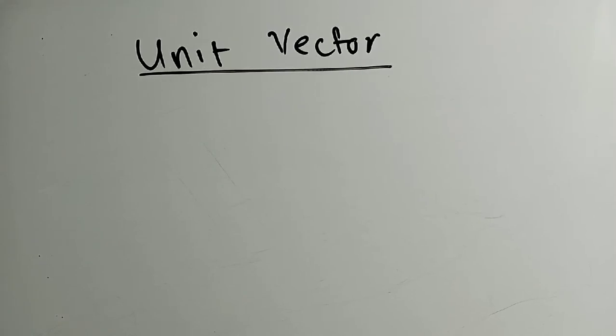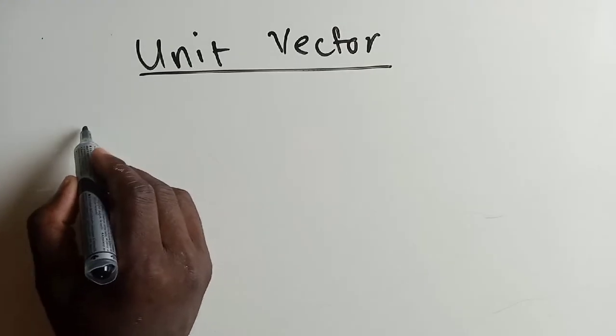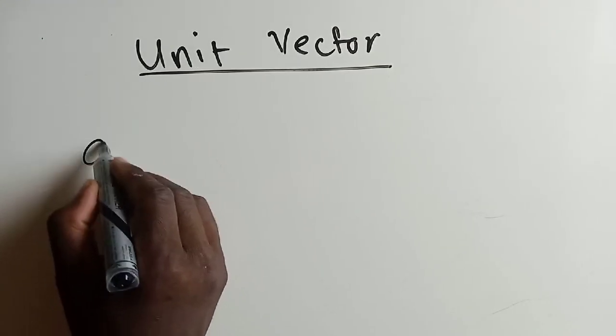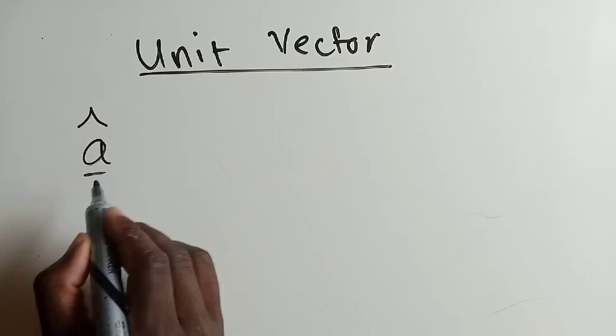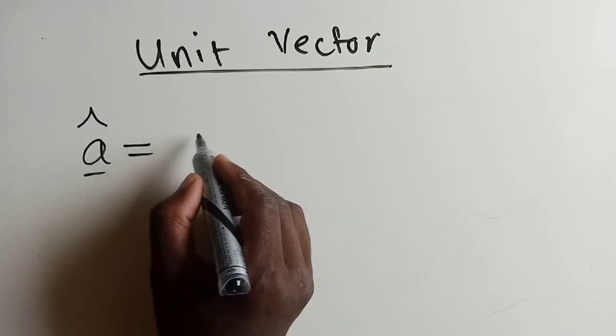A unit vector can be found by using a formula. Let's say you've got a vector called vector a. This cap on top means unit vector, and it is equal to the given vector over the magnitude of that given vector.